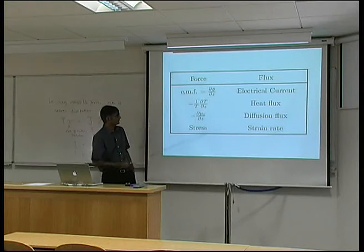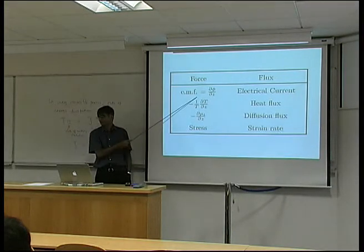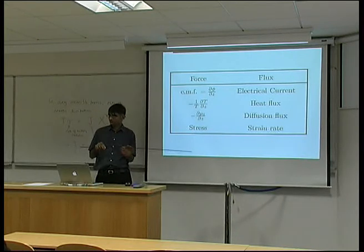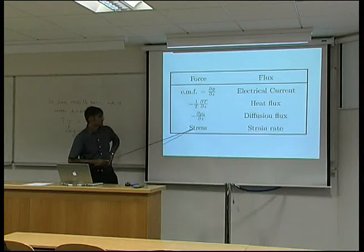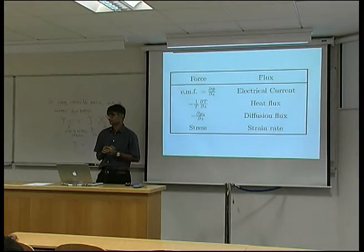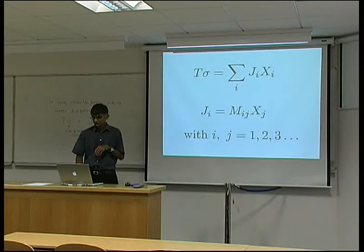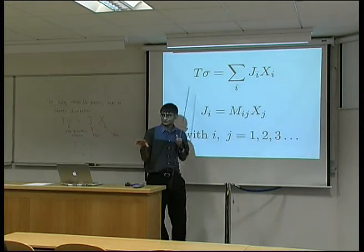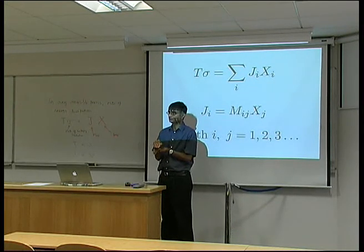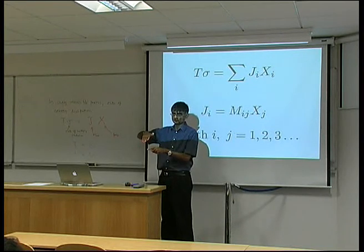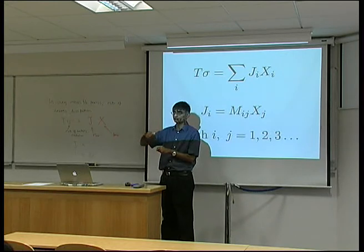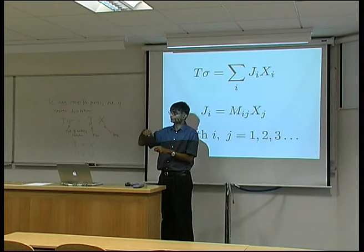Here is a summary of different forces and fluxes. For electrical current, the force is the voltage or electromotive force. For heat flux, the force is the temperature gradient. For diffusion flux, the force is the free energy gradient. For deformation at a given strain rate, stress is the driving force. In all cases, the product of flux and force gives joules per second. Now suppose we have more than one force acting simultaneously — for instance, both a free energy gradient and a temperature gradient driving diffusion.